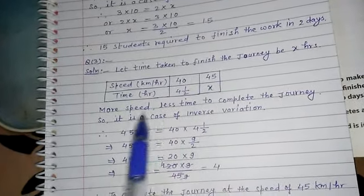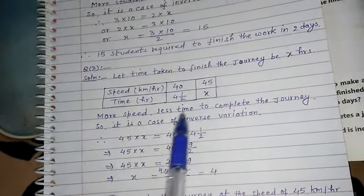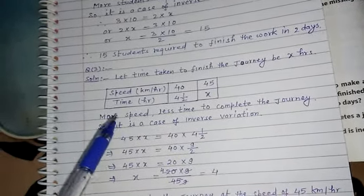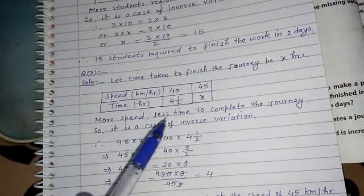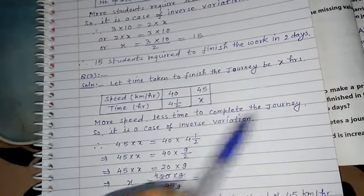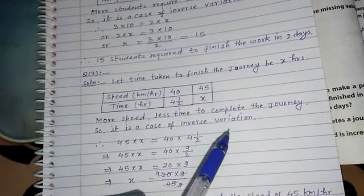More speed, less time to complete the journey. Here more, less. Here less, so here it will be more. To complete the journey, so it is the case of inverse variation.